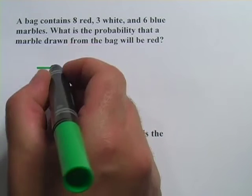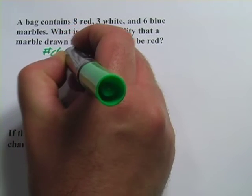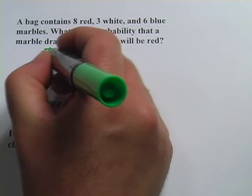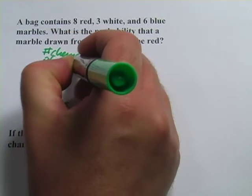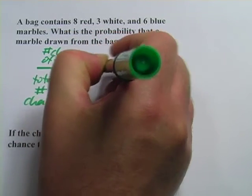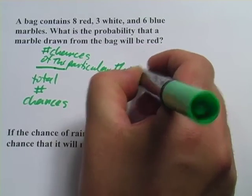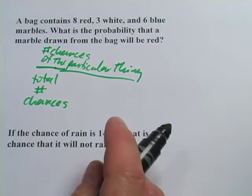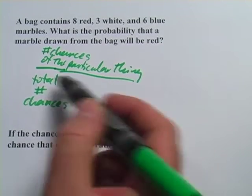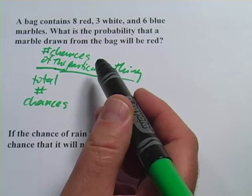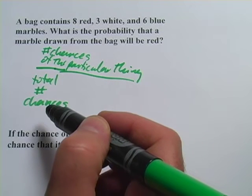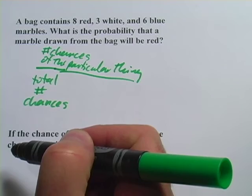And then on the top, it's the number of chances of the particular thing that's being asked about. That's a little wordy, but the idea here is that the total number of chances, if you're picking a marble from the bag, however many marbles there are, that's the total number of chances.